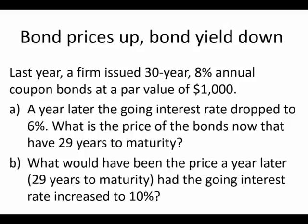This problem demonstrates the inverse relationship between prices and bond yield: when prices go up, yield goes down and vice versa. Suppose a company issued a 30-year, 8% annual coupon bond at par value of $1,000. A year later, the interest rate dropped to 6%, which is good for the company since they are paying 8%. We want to find the new price, given the inverse relationship between yield and bond prices.